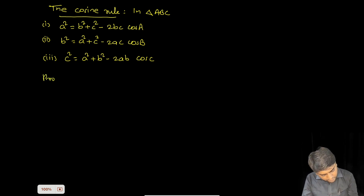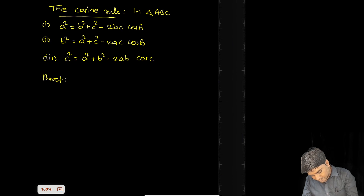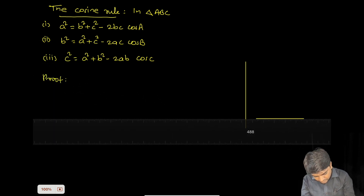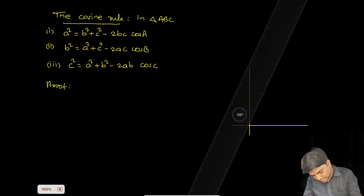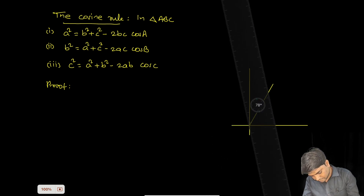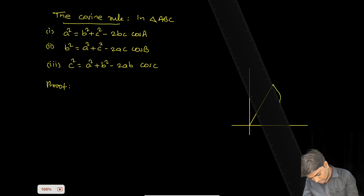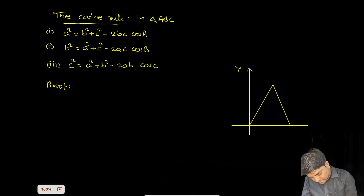Now let's see the proof of the theorem. To prove this, I am going to take one triangle. First I will draw the x-axis and y-axis. So this is my x-axis and y-axis, and here I am going to place the triangle.